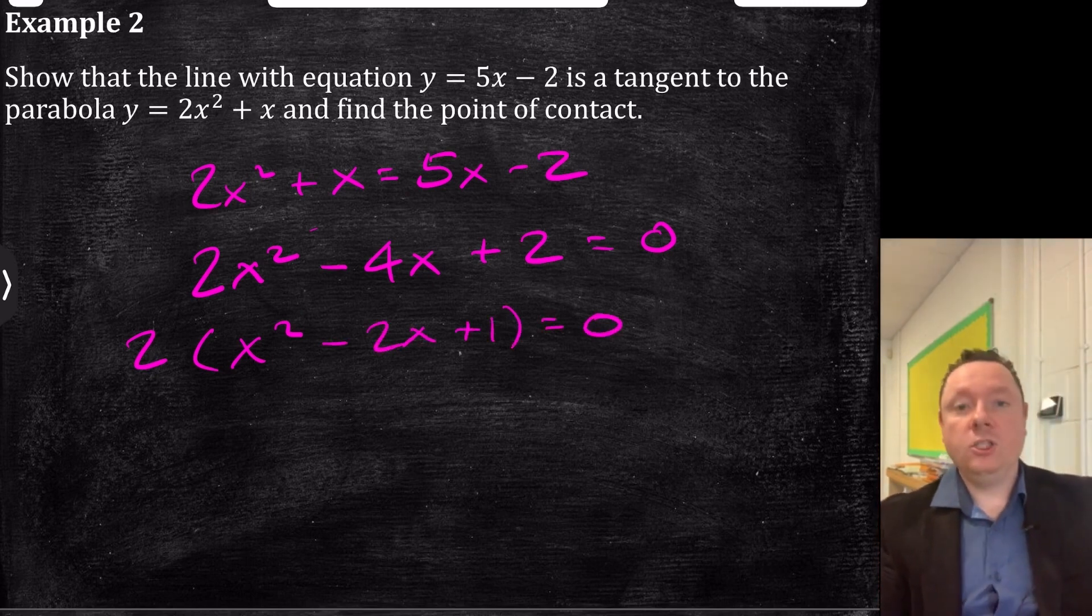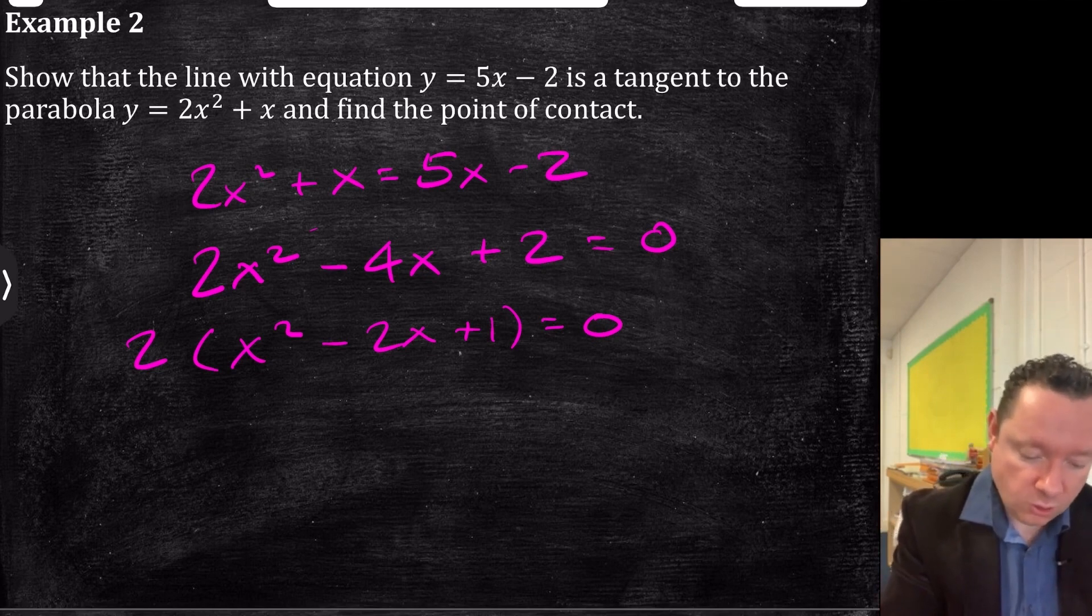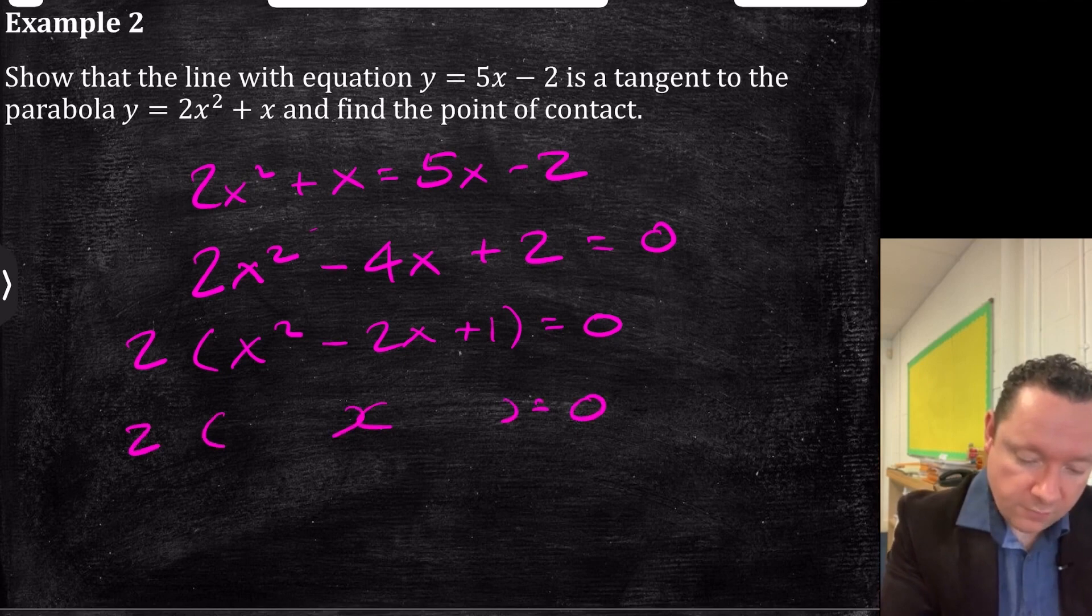Either to check if it's a tangent, we can check b² - 4ac, or just factorise it and show it has only one root. I have the options, but since we have to find the point of contact, we might as well just go ahead and do this. But, just at the side, if I check b² - 4ac,